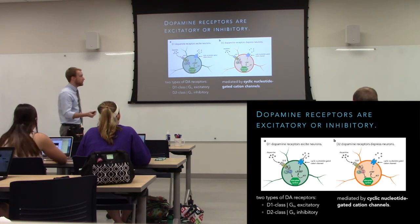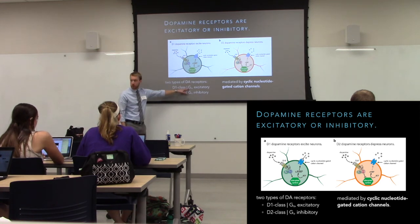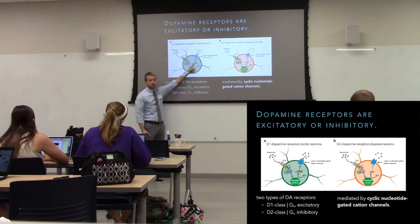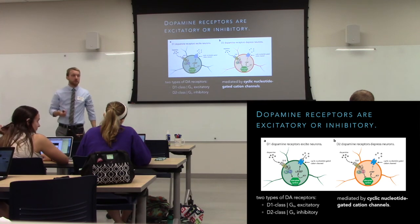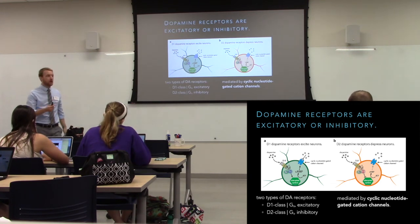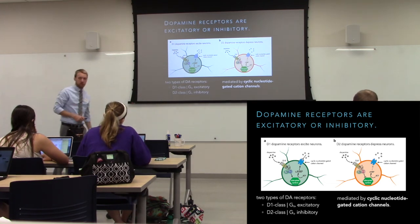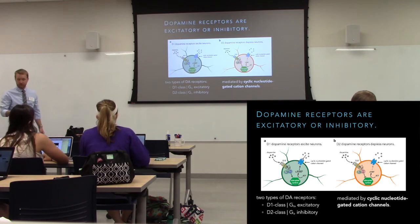Cells with D1 receptors — those are GS-coupled — stimulate adenylyl cyclase, increasing cyclic AMP levels, stimulating cyclic nucleotide-gated cation channels, producing greater cation influx and excitation. Both D1 and D2 bind dopamine, but they have different G proteins on the inside. These will come up again when we talk about the basal ganglia — that's why the direct and indirect pathways are affected differently by dopamine.